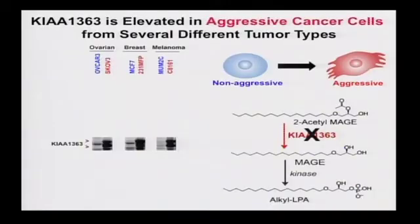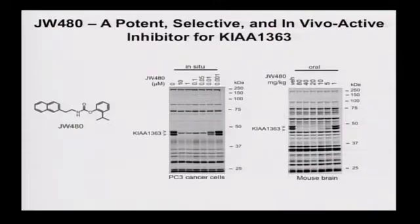Kyle was able to map enzyme 1363 as driving some of this metabolic change, but we didn't really have at that point a legitimate 1363 inhibitor to test the enzyme's function in more detail. Using our competitive activity profiling technologies, Jaywon Chang in our lab developed a very effective 1363 inhibitor. This works both in cancer cells to selectively block 1363 activity, again in this activity gel.